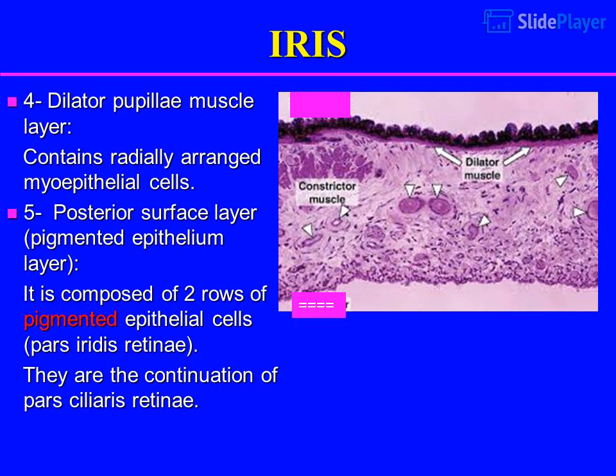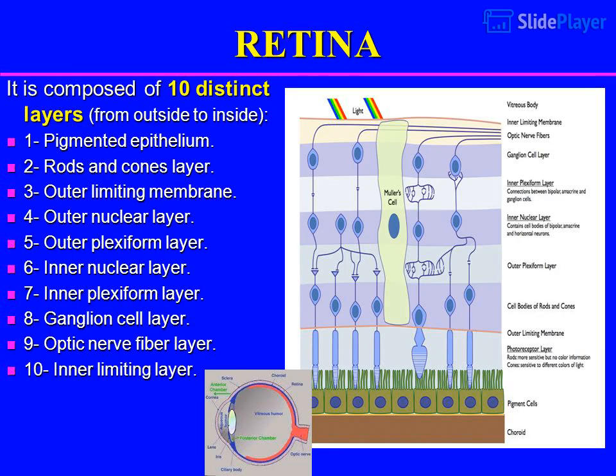Retina: it is composed of ten distinct layers, from outside to inside: 1. Pigmented epithelium, 2. Rods and cones layer, 3. Outer limiting membrane, 4. Outer nuclear layer, 5. Outer plexiform layer, 6. Inner nuclear layer, 7. Inner plexiform layer, 8. Ganglion cell layer, 9. Optic nerve fiber layer, 10. Inner limiting membrane.